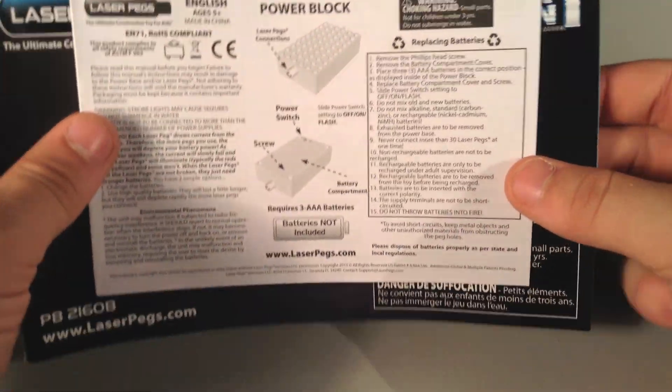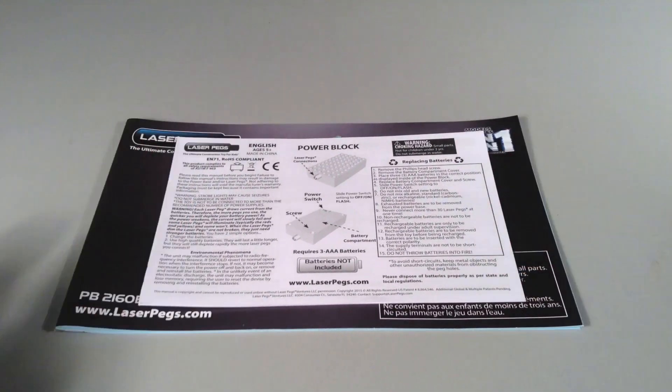The other manual is basically just for the batteries and stuff like that for the laser pieces, and basically just tells you what you need in order to make your set light up and do all the crazy stuff that Laser Pegs allows you to do.